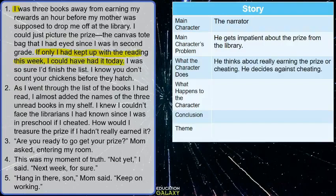What does the character do? He thinks about cheating — he considers just lying and saying to his mom that he has finished reading. 'As I went through the list of the books I had read, I almost added the names of the three unread books on my shelf.' That is what the narrator considers. That's dangerous!